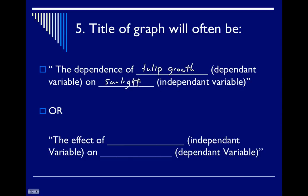on the independent variable was sunlight. So, that would make for a very succinct statement about what your data is trying to represent. You can also do it in another worded example that kind of just flips that around. So, we could say the effect of sunlight and that puts the independent variable first on, in this case, it's going to be tulip growth.